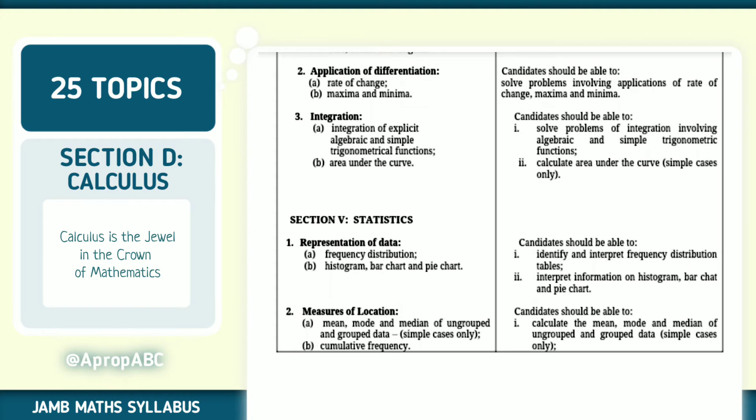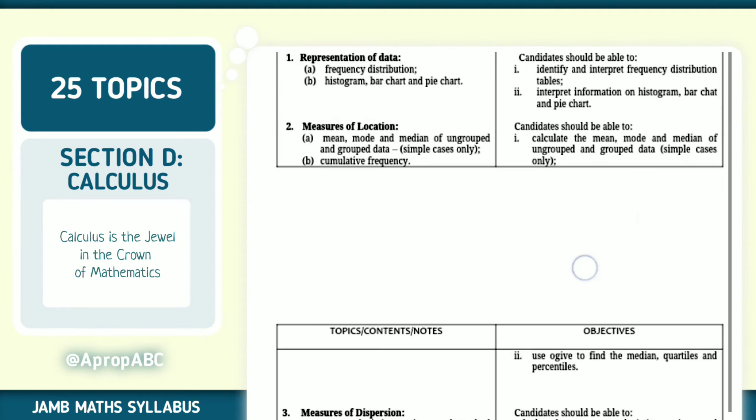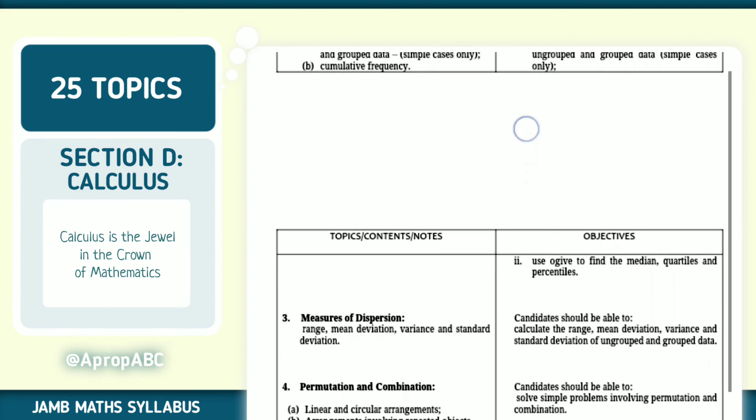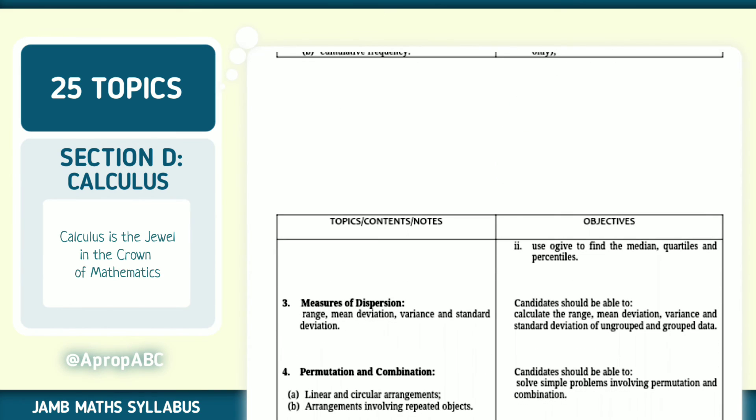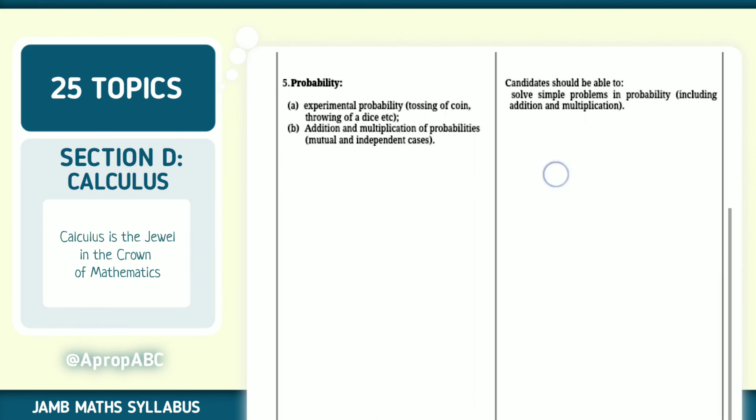The fifth section is Statistics. Statistics is where mathematics intersects with real world data, and you use this to make informed decisions. Topics include representation of data, measures of location, measures of dispersion, permutation and combination, and probability.